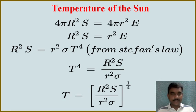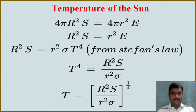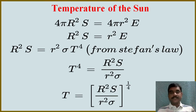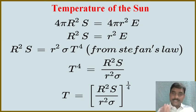Scientists use different methods to calculate the sun's temperature. In this video, we will use two methods: by using Stefan's law, we can measure the temperature of the sun, and by using Wien's displacement law we can also measure the temperature of the sun. First, I am going to explain how to measure the temperature of the sun by using Stefan's law.